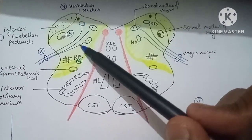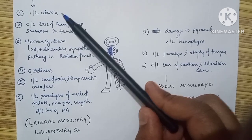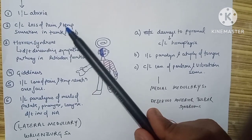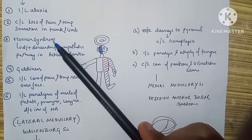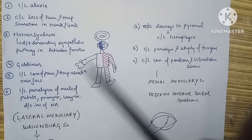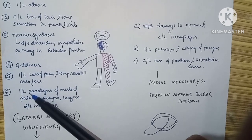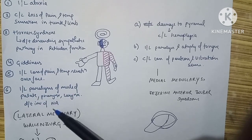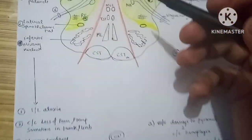To revise the six manifestations of Wallenberg syndrome (dorsolateral medullary syndrome): ipsilateral ataxia due to the cerebellar peduncle; contralateral loss of pain and temperature sensation in the trunk and limbs due to the lateral spinothalamic tract; Horner syndrome due to reticular formation; giddiness due to vestibular nuclei; ipsilateral loss of pain and temperature sensation over the face due to the spinal nucleus of the trigeminal nerve; and ipsilateral paralysis of the muscles of the palate, pharynx, and larynx due to nucleus ambiguus.